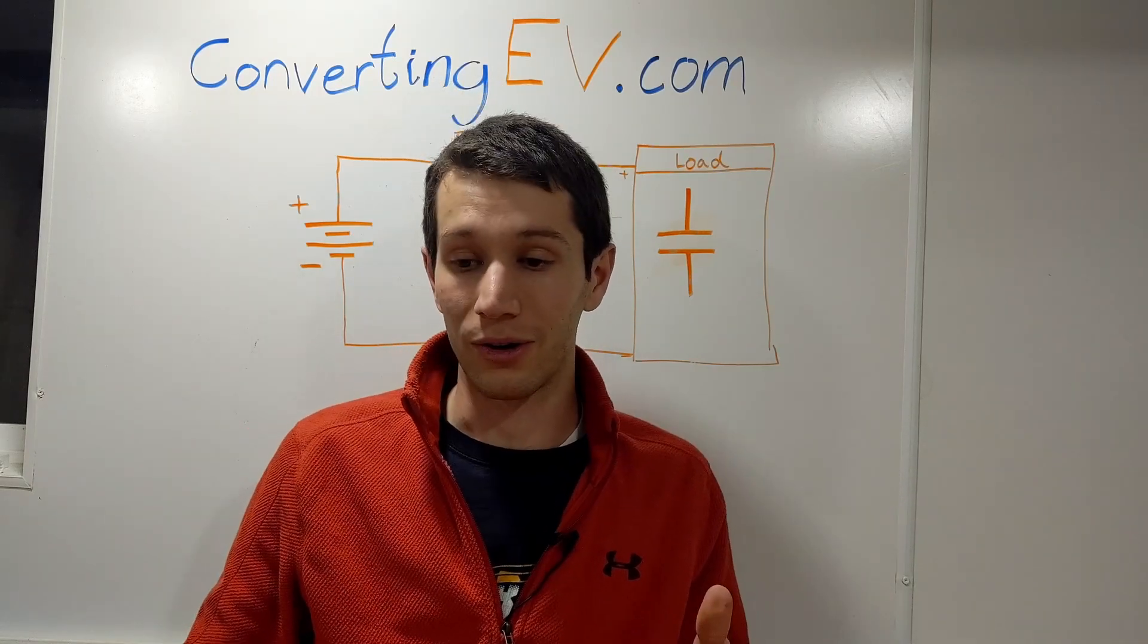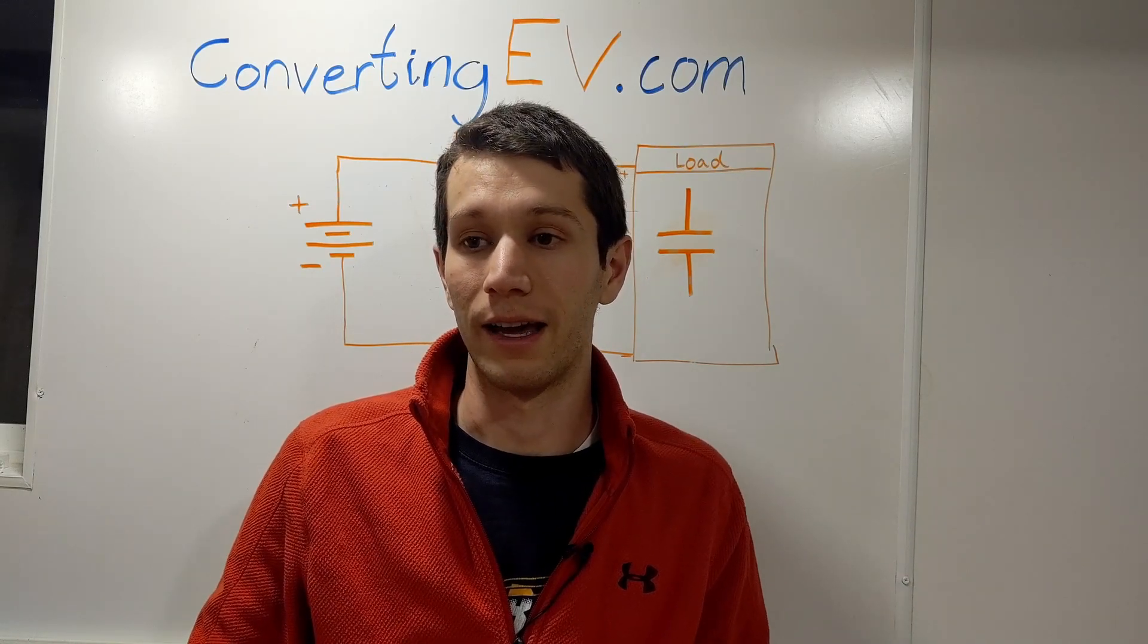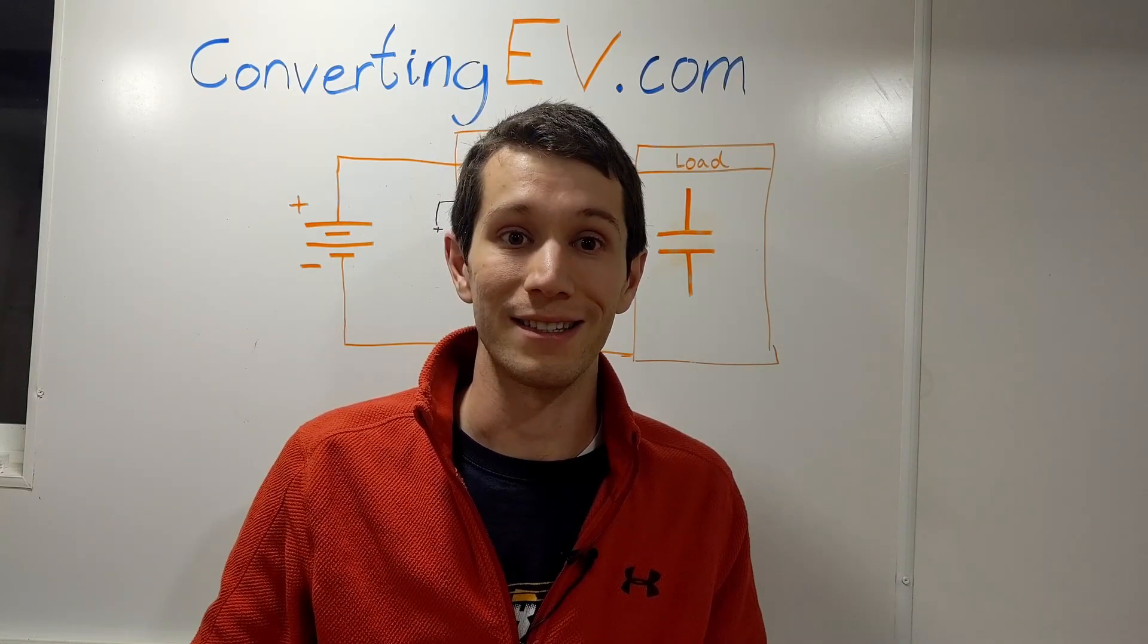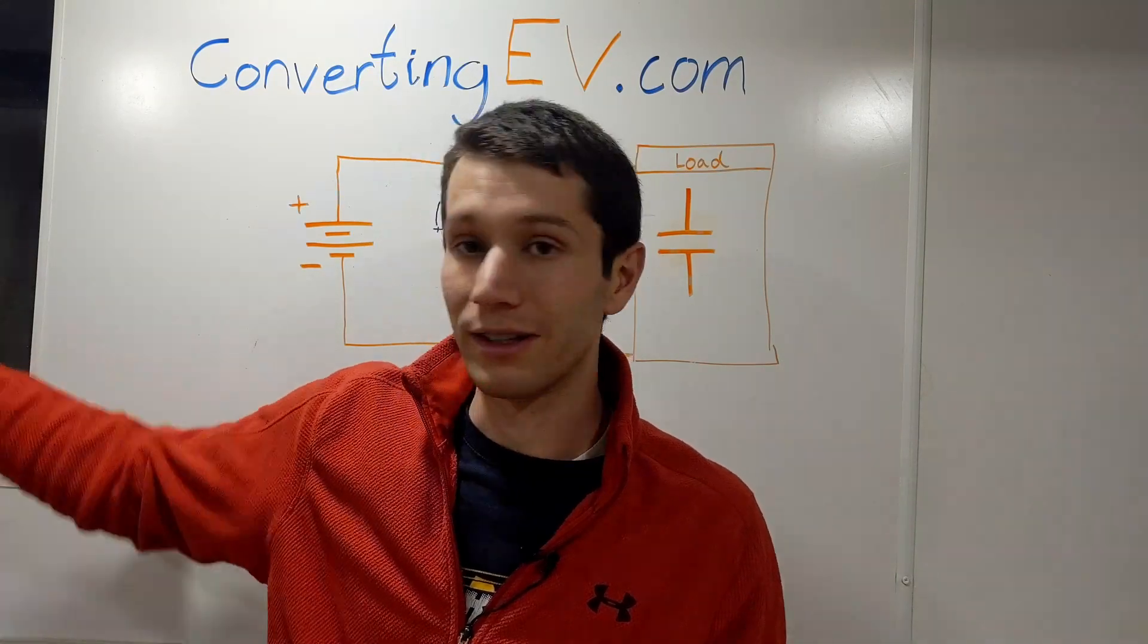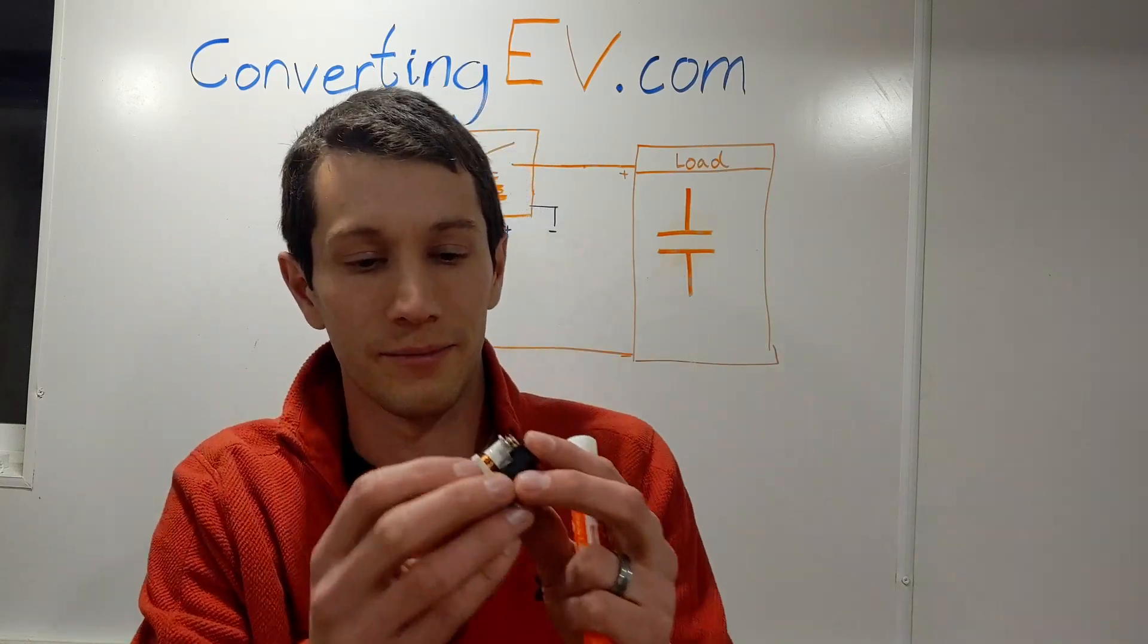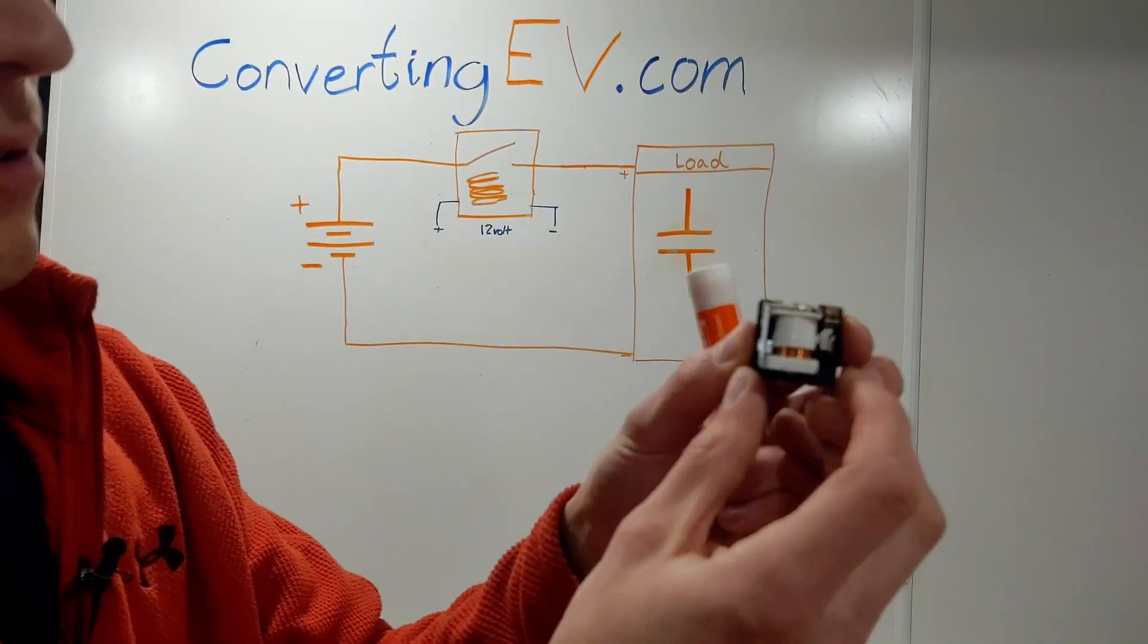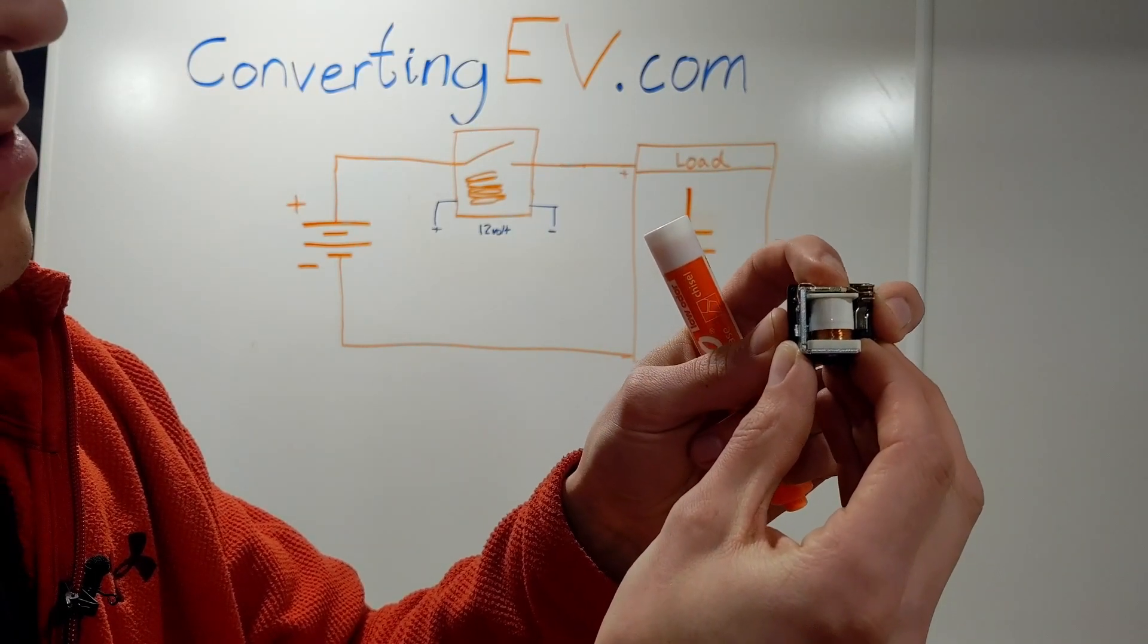I guess first if you don't know, a contactor, a main contactor, all it is is a big relay. And a relay, if you don't know, all it is is an electronically controlled switch. So actually I have an automotive relay broken apart here. It's just a coil. And when you run power through the coil, it magnetizes and pulls the switch shut.